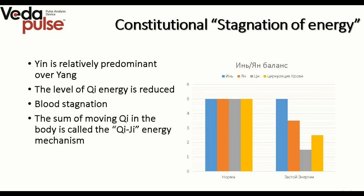In the constitutional energy stagnation diagram, basic components of the body are presented. The blue bar shows the level of yin, the orange one stands for yang energy, the grey bar shows the level of prana or qi energy, and the yellow bar shows blood circulation level. The blood stagnation syndrome can be of a two-stage character. The first diagram shows normal state, while the second shows energy stagnation at the first stage of development — an increase of yin and kapha, yang becomes subdominant, the level of energy rapidly goes down because of the blockage, and thus circulation goes down too.